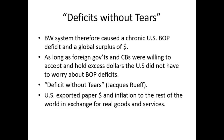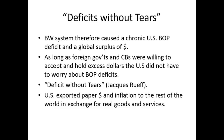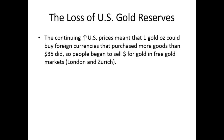Jacques Rueff was the French economist who used the term 'deficits without tears,' and he was an advisor to President Charles de Gaulle, who did not like U.S. dollar dominance. U.S. prices continued to go up so that one gold ounce could buy foreign currencies that purchased more goods than the $35 could. People began to sell their dollars for gold in London and Zurich, pushing the gold price up to $38 to $40. But the U.S. had to keep the price at $35, so it sent gold out to foreign governments who would sell it in those markets. We began to hemorrhage gold.